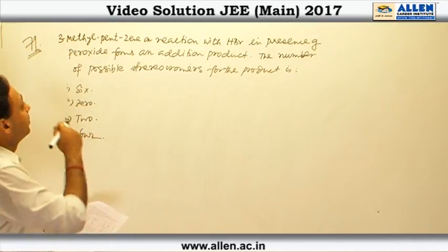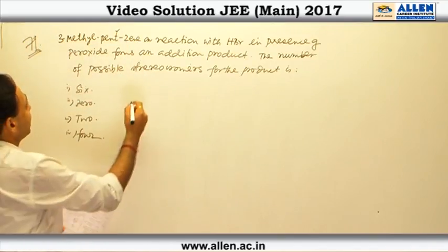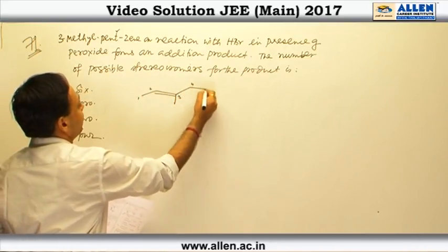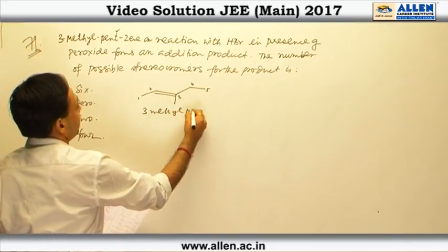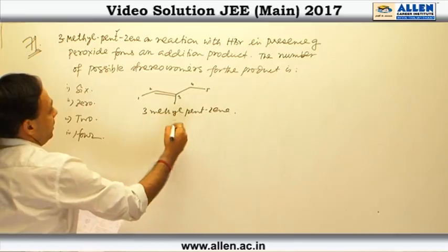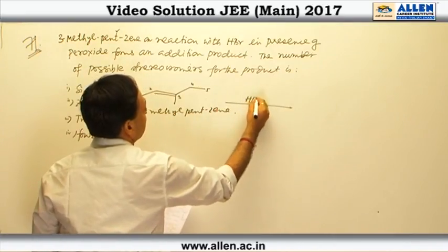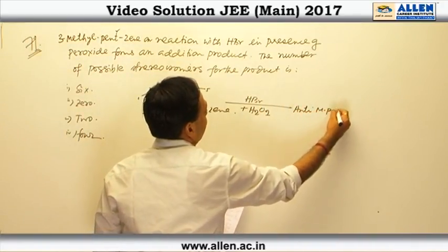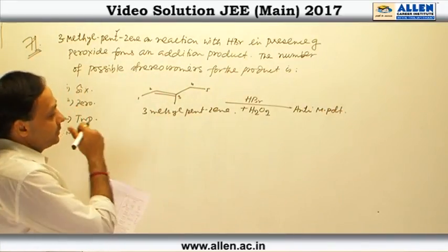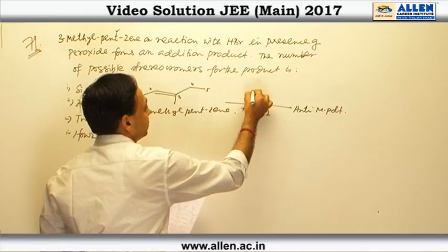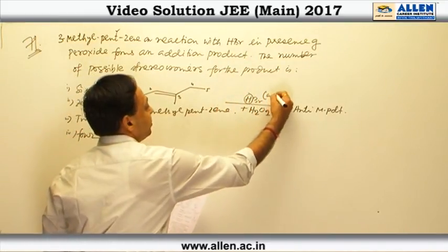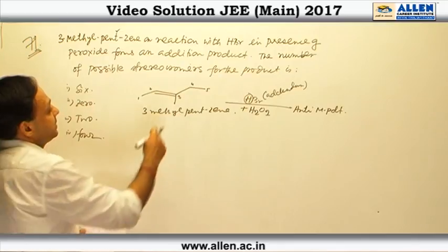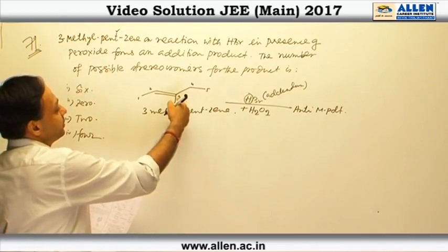To solve the problem, first I have to draw the structure. The structure is 1, 2, 3, 4, 5 — this compound is 3-methylpentene. It reacts with HBr and H2O2, which gives anti-Markovnikov product. According to this, the positive part of the addendum, which is H⁺, will be attached to the carbon having less number of hydrogen atoms — that means carbon number 3.